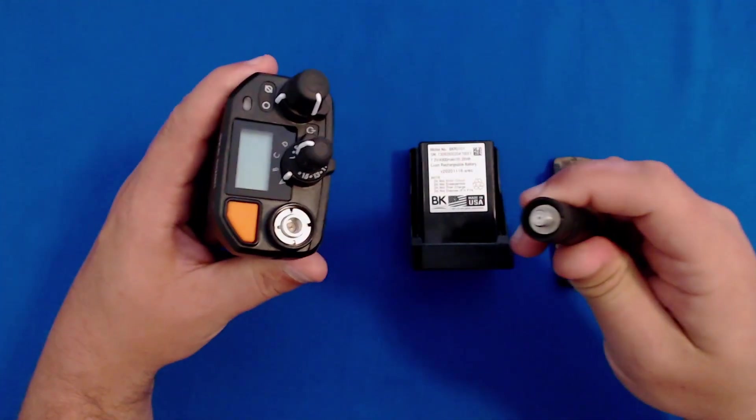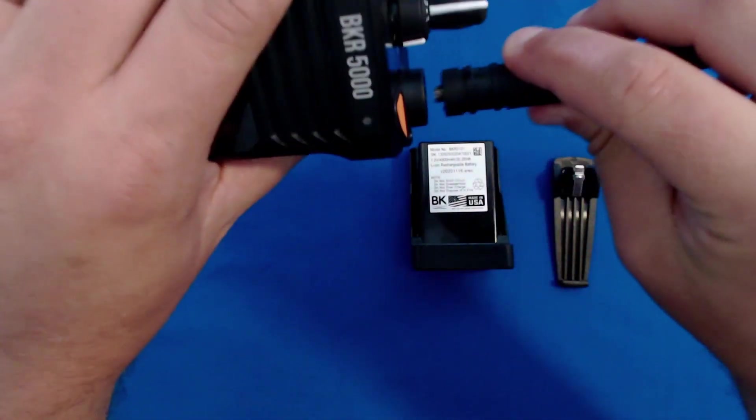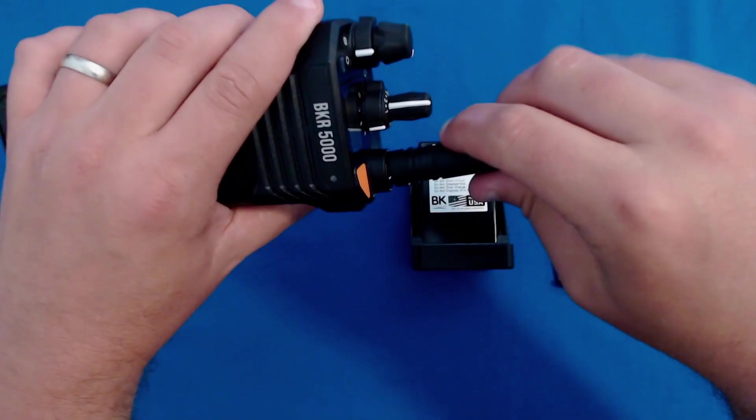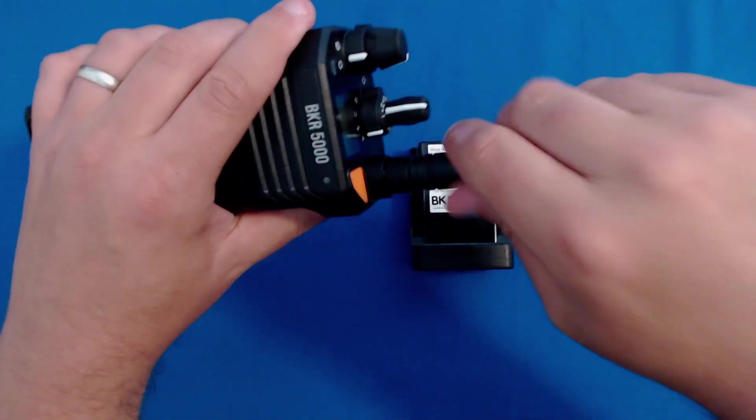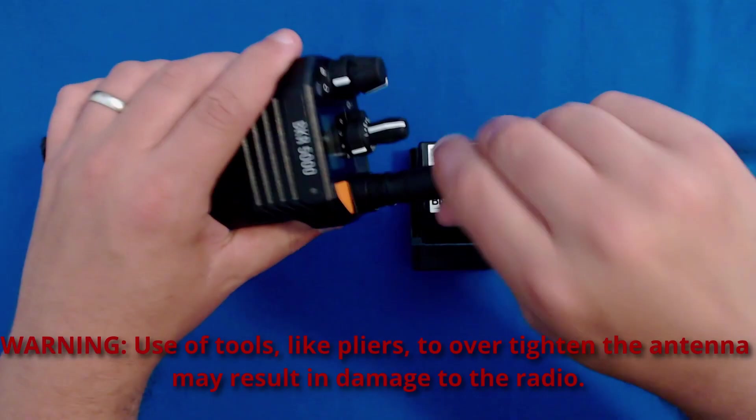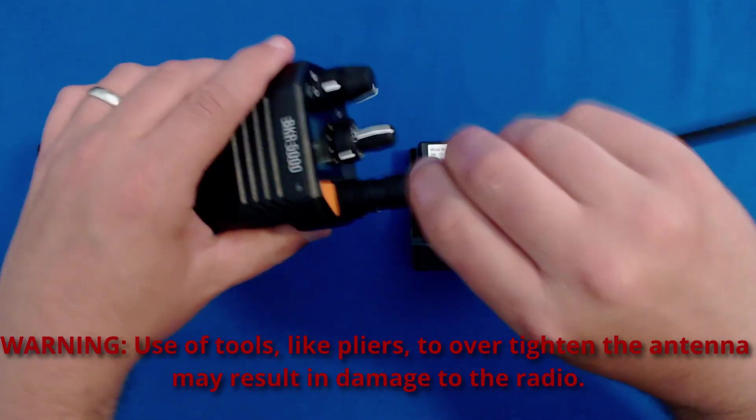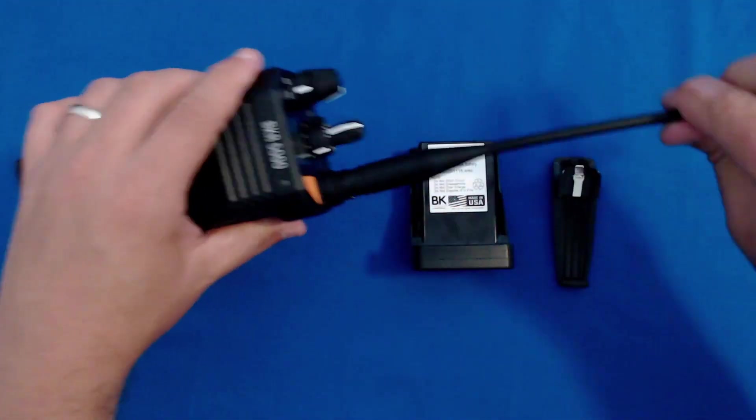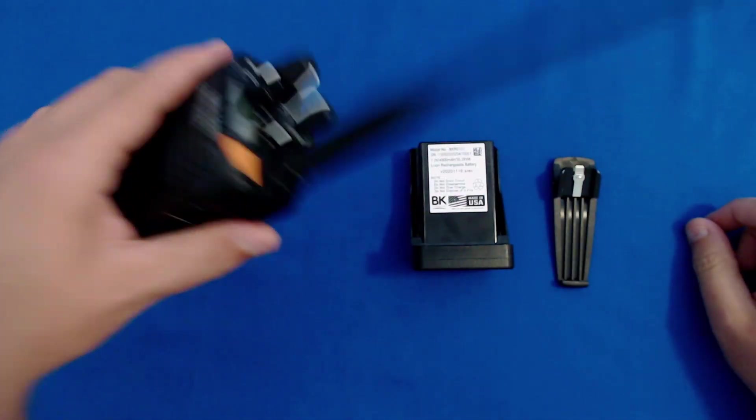To install the antenna, mate the antenna end to the radio end and gently screw clockwise. Once the threads are connected, you can screw until firm. Don't use tools or over-tighten this antenna connection.